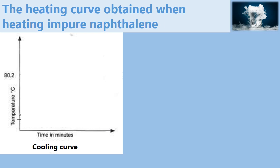The heating curve obtained when impure naphthalene is heated will look something like this.